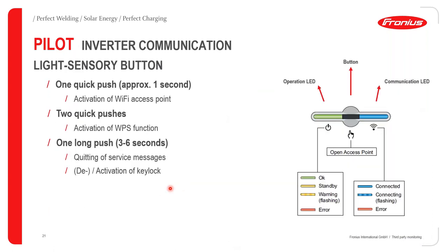Going further with the Pilot and how it achieves communication: it has a light-sensitive touch button through which you can activate the Wi-Fi access point. Pushing once activates the Wi-Fi access point. Two quick pushes activates the WPS function — the wireless protected setup function.